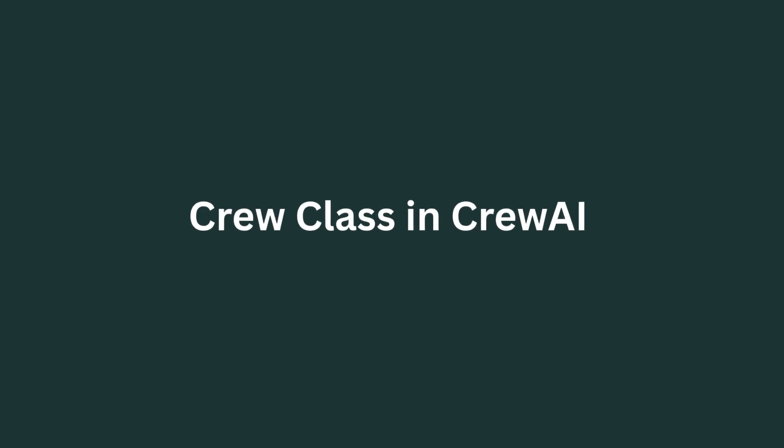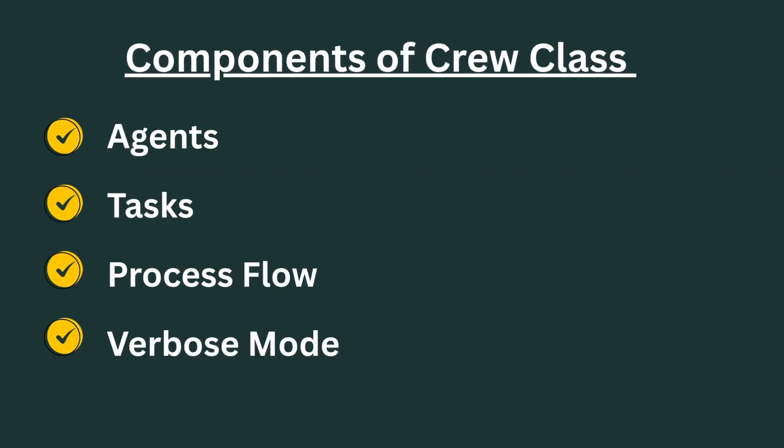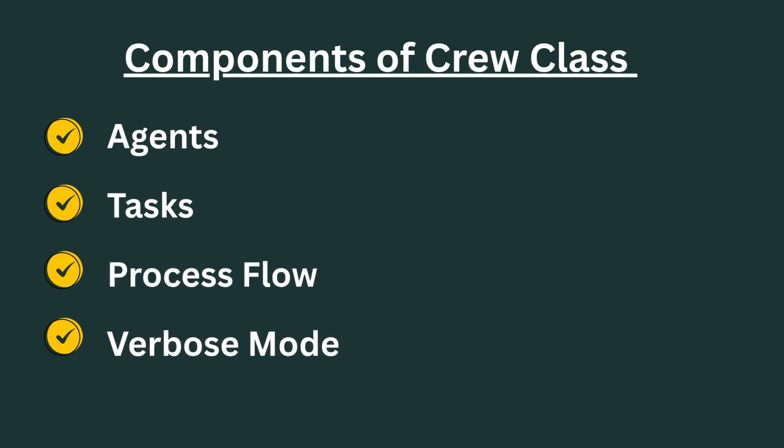Now that we've looked at both agents and tasks in CrewAI, we're also going to explain the crew class. In CrewAI the crew class coordinates multiple agents and their tasks, enabling them to work together to execute complex workflows. The crew class serves as a central component and manages the sequence and interaction of tasks performed by the various agents. The components of the crew class include agents, tasks, process flow, and verbose mode.